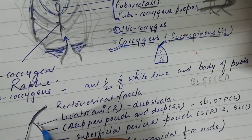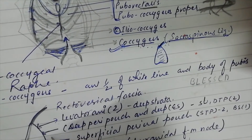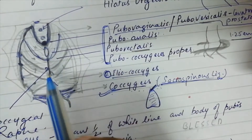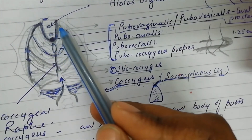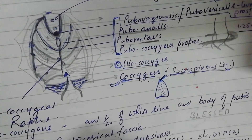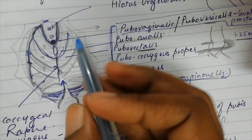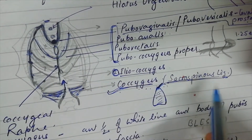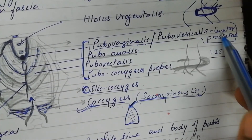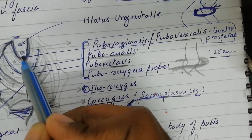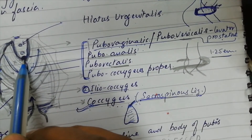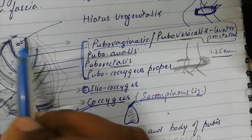Various muscles are attached to this perineal body. Levator Ani is commonly attached — but only the anterior portion of pubococcygeus, meaning only the pubovaginalis or levator prostaticus fibers — are attached to this perineal body, not the whole of the Levator Ani.